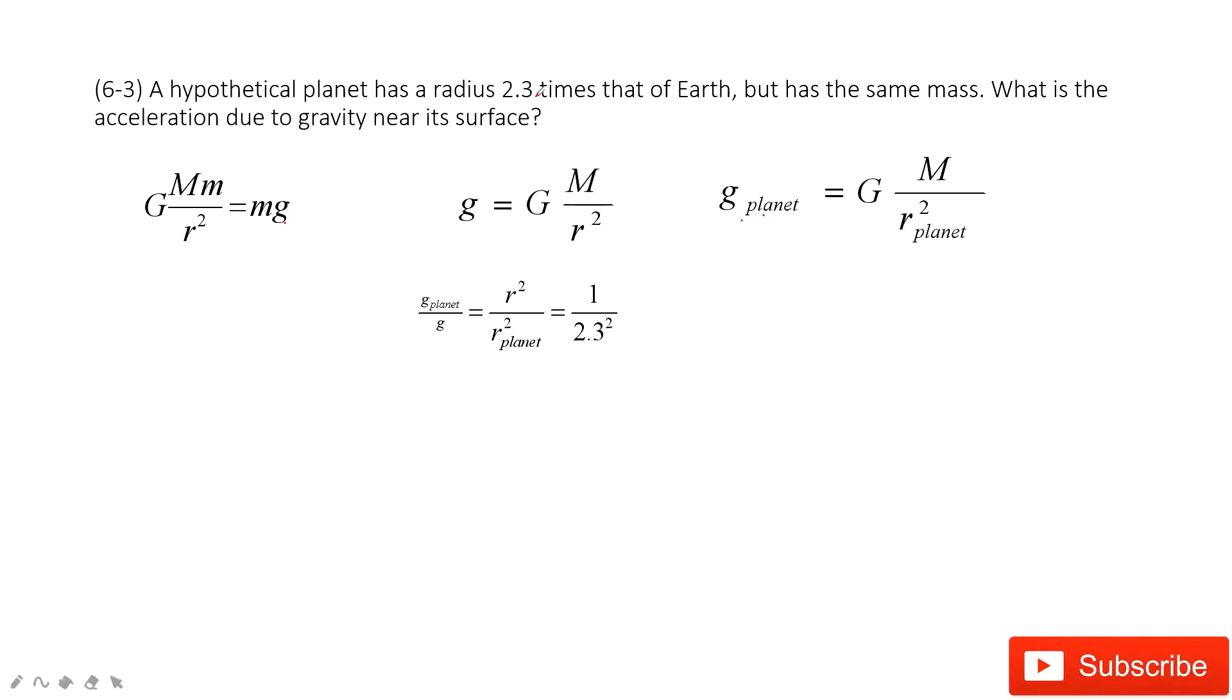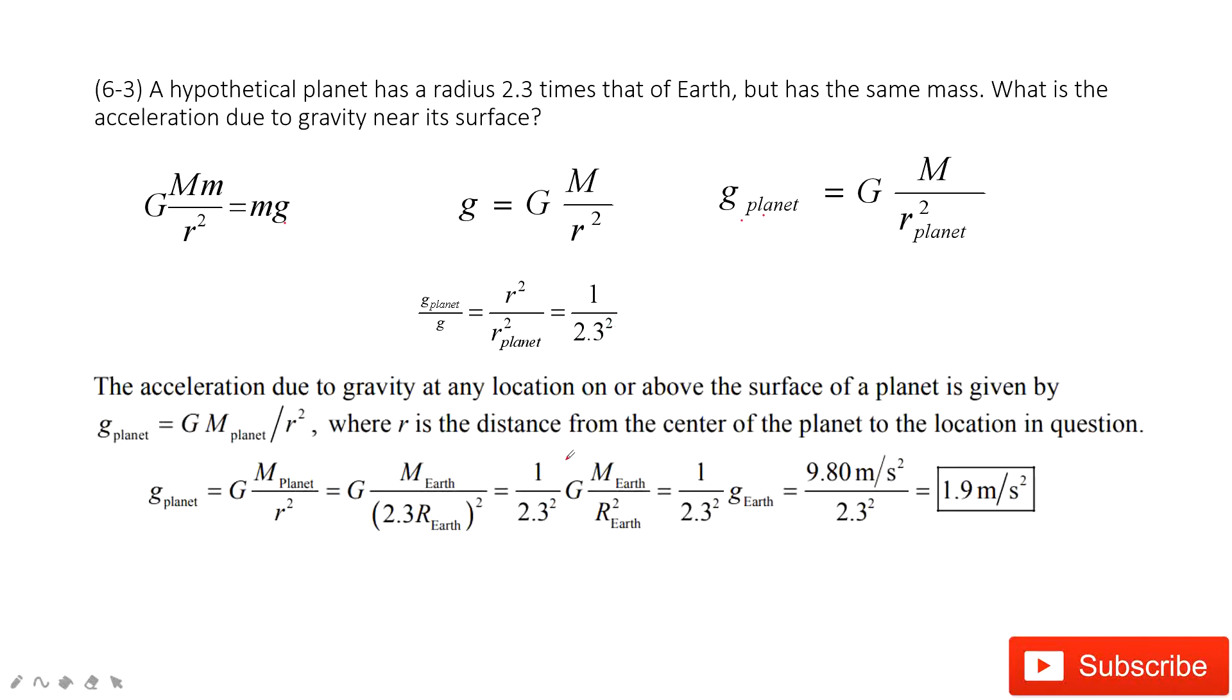As you can see, this planet has the radius 2.3 times that of the Earth. So 1 divided by 2.3 squared. In this one, we can find it is just 1.9 meters per second squared. So this g planet is just 1 over 2.3 squared times the g Earth. g Earth is 9.8 meters per second squared. We get the final answer.